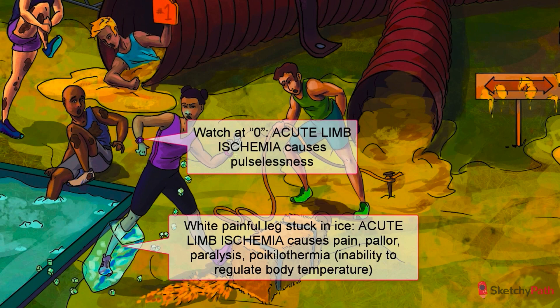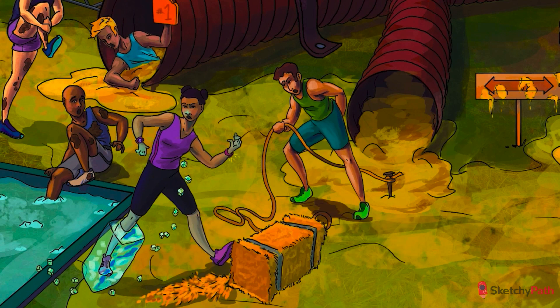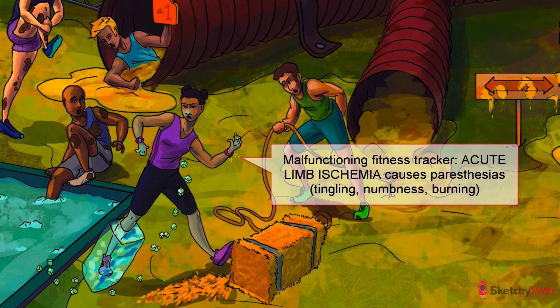While the first four are pretty self-explanatory, poikilothermia is a term that means inability to regulate body temperature — specifically here, hypothermia from lack of blood flow. Paresthesia refers to neurosymptoms including tingling, numbness, or burning. These are all embodied by the leg trapped in ice — painful, pallor underneath, paralysis, and definitely poikilothermic. Acute limb ischemia is an emergency; without quick action, the ischemic limb can quickly turn necrotic and gangrenous, ultimately leaving amputation as the only option.